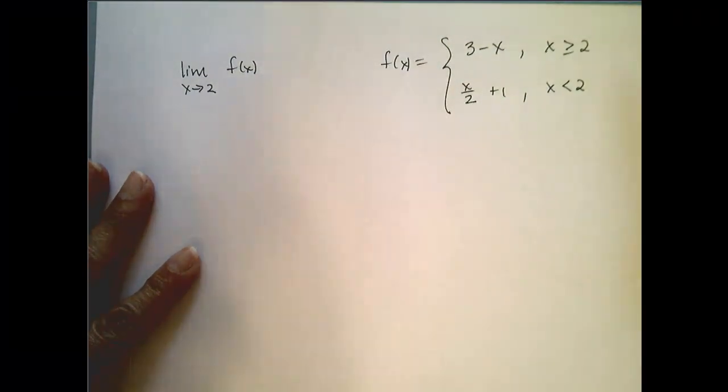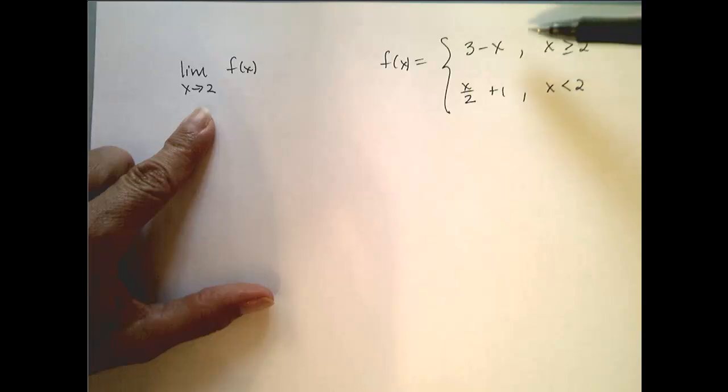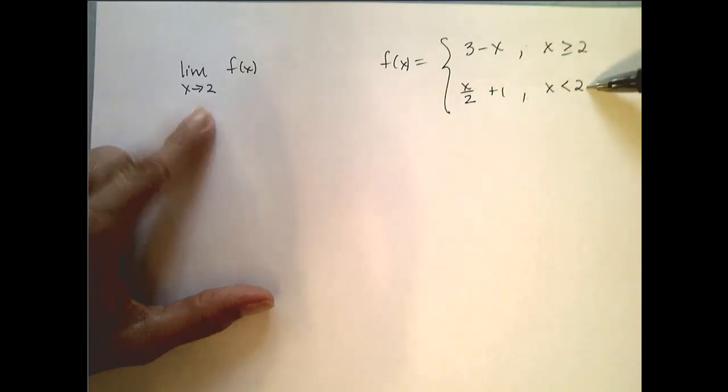Since my function is defined differently on either side of 2, in order to evaluate this limit I must look at the left and the right-handed limits.